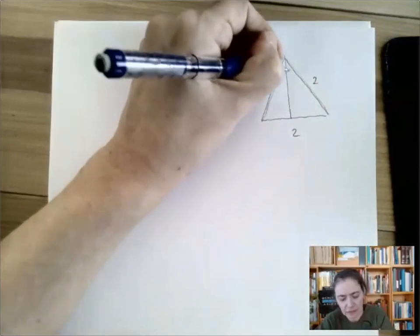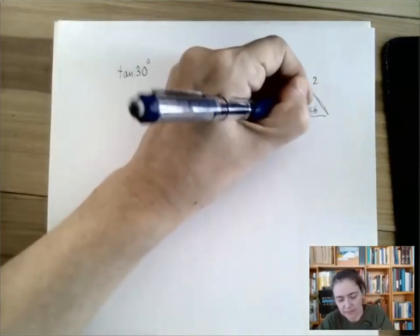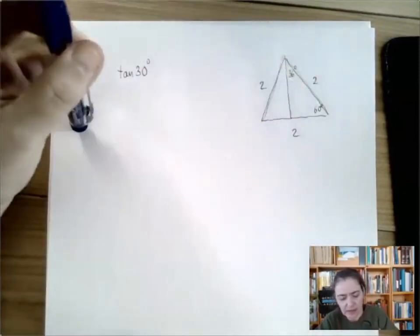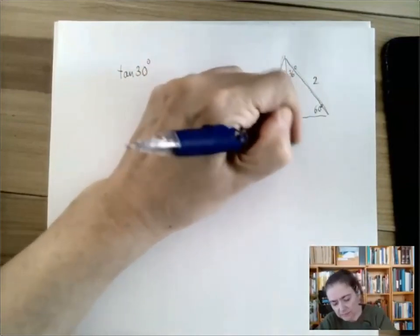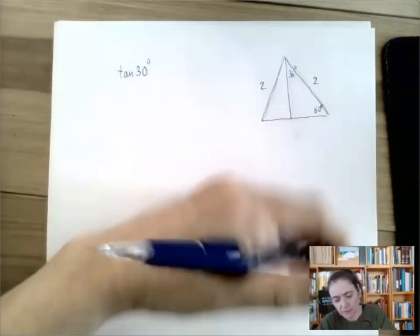Thereby creating a 30, 60, 90 triangle. And because of the symmetries, we know that focusing on this half, we know that this side is one.